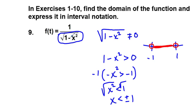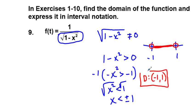We can verify: putting in x equals 1 gives 1 minus 1 equals 0 in the denominator, and you can't divide by 0. Same for x equals negative 1. So the domain is greater than negative 1 and less than 1, written in interval notation as (-1, 1). That covers the odd-numbered problems — go ahead and tackle the even-numbered problems. Thank you for viewing.